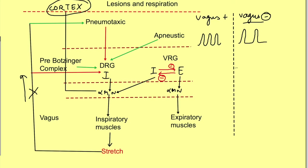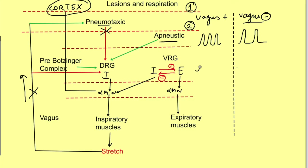If the lesion is between the pneumotaxic center and apneustic center, the pneumotaxic center can no longer inhibit the dorsal respiratory group, but the apneustic center is still active. This causes greatly increased depth of respiration, known as apneusis — a gasping pattern with too much depth and much less rate. If the vagus is also cut, this is further aggravated: even greater increase in depth and decrease in rate of respiration.